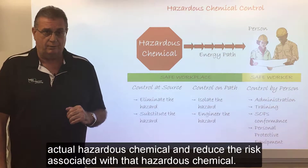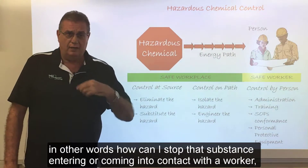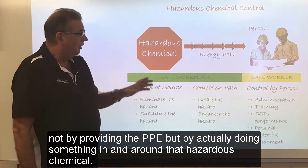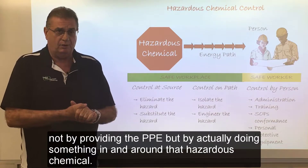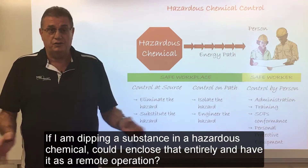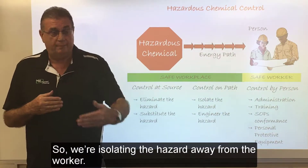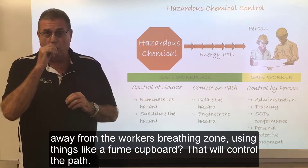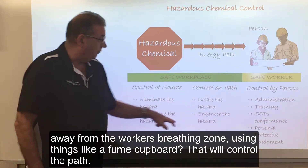If I can't do that, then I might need to look at how I can control that on the energy path — in other words, how can I stop that substance coming into contact with a worker, not by providing PPE but by doing something in and around that hazardous chemical. For example, could I isolate the hazard? If I'm dipping a substance in a hazardous chemical, could I enclose that entirely and have it as a remote operation? Could I engineer the hazard — could I put in a ventilation system that draws the chemical or fume away from the worker's breathing zone using things like a fume cupboard?